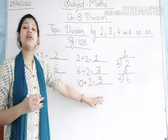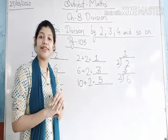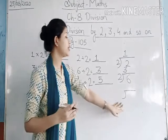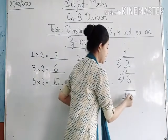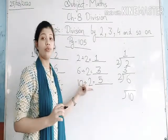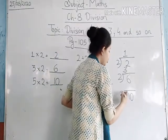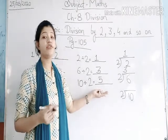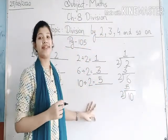Now we will arrange this division fact under the division symbol. Which number will come inside the symbol? The dividend — 10. So we place 10 inside the symbol. Which number will come outside? The divisor — 2. So we write 2 outside. And which number comes above the symbol? 5, because 5 is the quotient and the quotient always stays above the symbol. I hope these three questions are clear to you all.